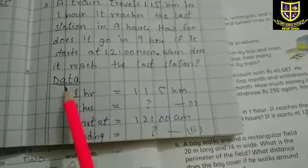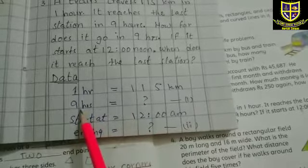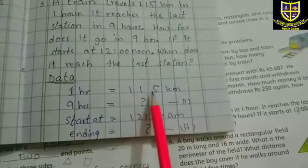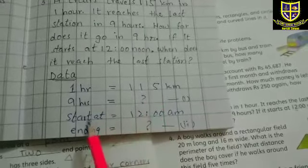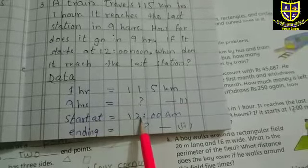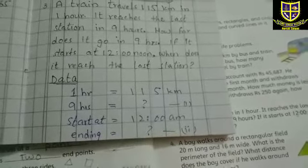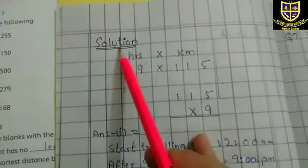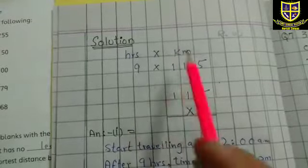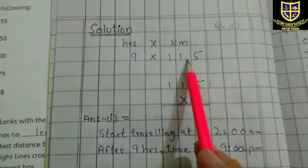جلدی سے data لکھ دیتے ہیں: one hour میں یہ 115 kilometers طے کرتا ہے۔ Nine hours میں کتنا کرے گا — ہم nine کو 115 kilometers سے multiply کریں گے۔ Starting time اس کا 12 am ہے تو ending time کے لیے nine hours کو plus کریں گے۔ Solution: hours کو kilometers کے ساتھ multiply کریں گے — nine hours اور 115 kilometers، یعنی nine times repeat ہوگا۔